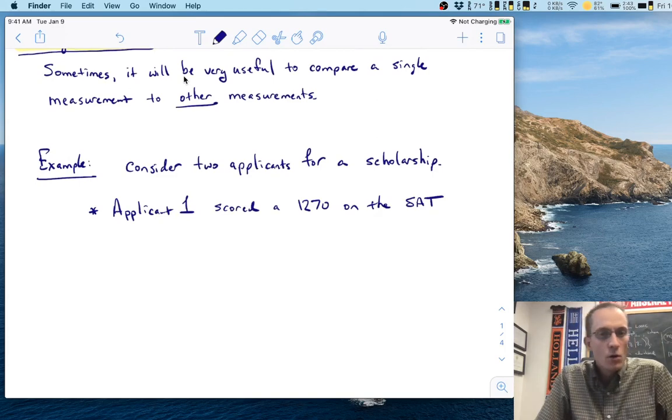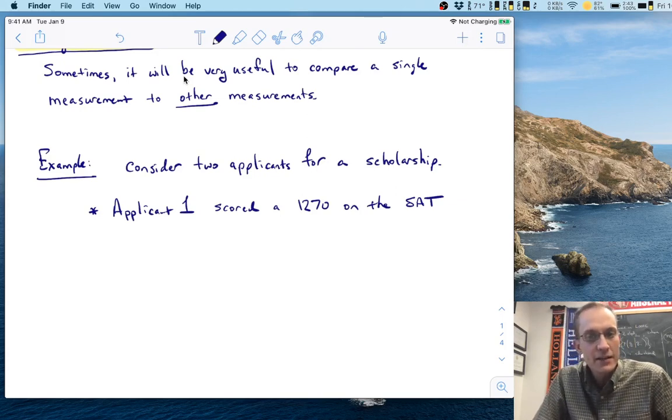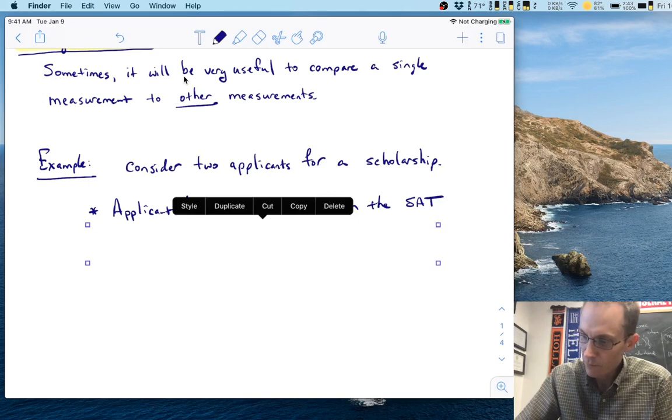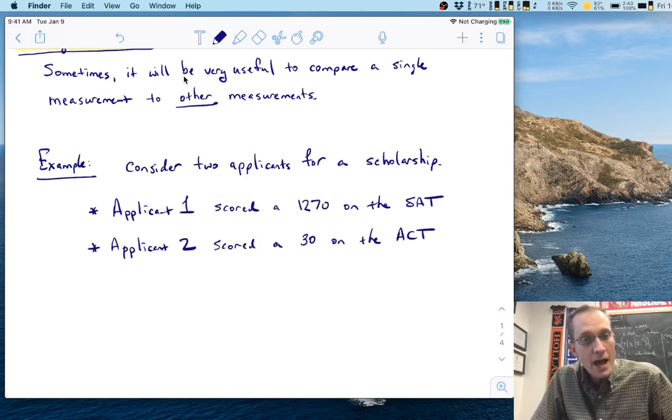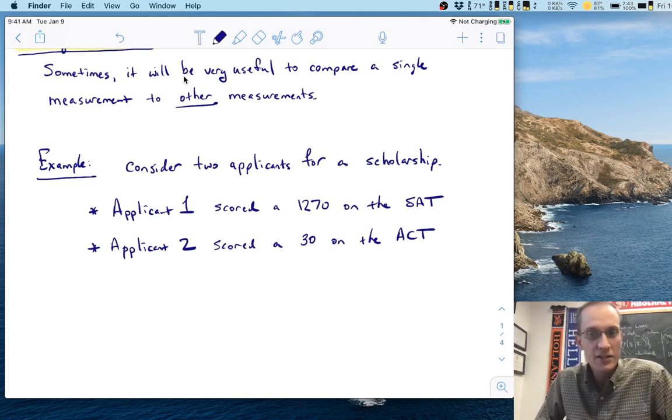let's consider two applicants that we might have for a scholarship. Applicant one, we know that they scored a 1270 on the SAT. Now, if you're watching this and you're not in the United States, the SAT is a common standardized exam for university entrance. And we have another applicant, applicant two, and they scored a 30 on the ACT, the ACT being a different college admittance exam.